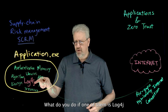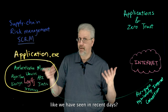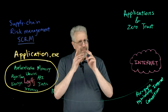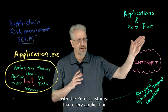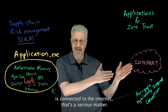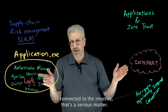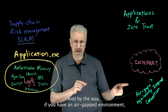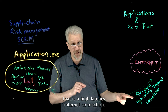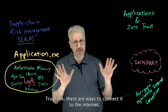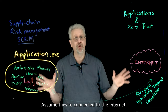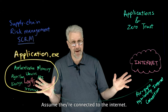What do you do if one of them is log4j, like we have seen in recent days? Well, with the zero trust idea that every application is connected to the internet, that's a serious matter. And by the way, if you have an air gap environment, that is a high latency internet connection. Trust me, there are ways to connect it to the internet — not always direct, but they're there. Assume they're connected to the internet.